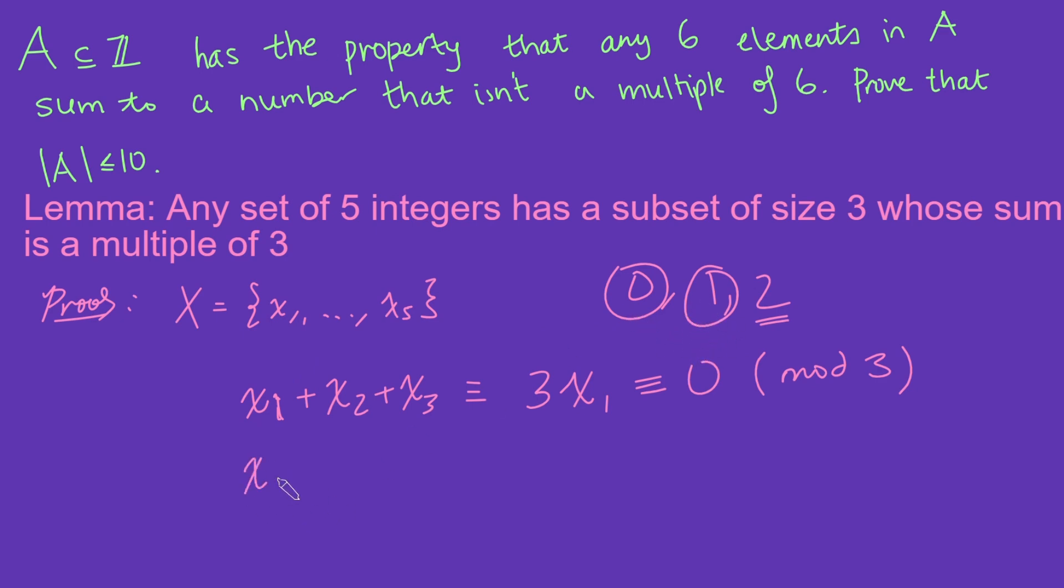Let's just call them xi, xj, and xk. And then I'll add them up, and in some order, that will be zero plus one plus two mod 3, and that's just zero mod 3. And so then that would be my subset. And that proves my lemma here, that if I take any five integers, there will be a guaranteed subset of size three whose sum is a multiple of three.